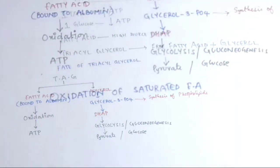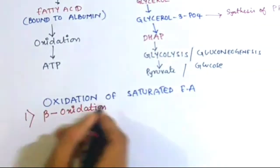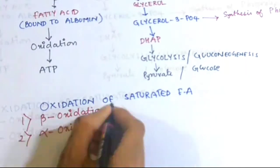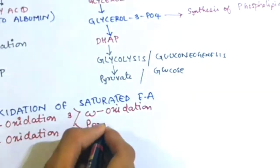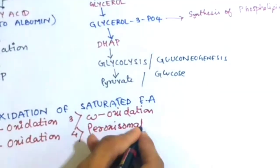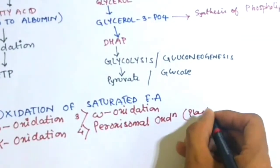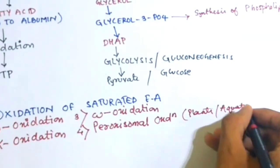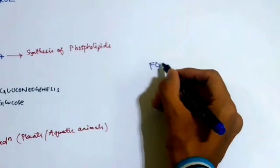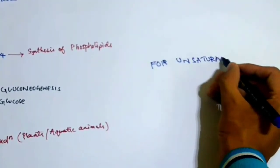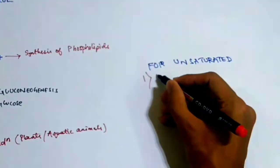The oxidation of saturated fatty acids is divided into four classes: beta-oxidation, alpha-oxidation, omega-oxidation, and peroxisomal oxidation, which is seen in plants and aquatic animals. For unsaturated fatty acids, there is a beta-modified oxidation pathway.